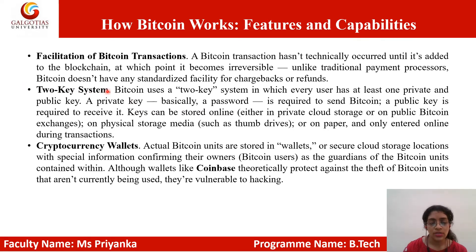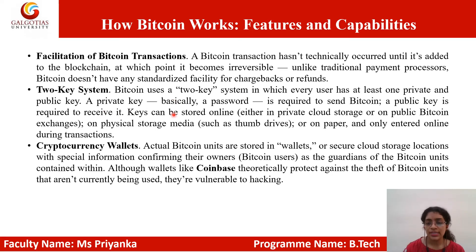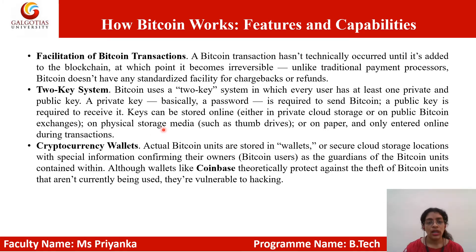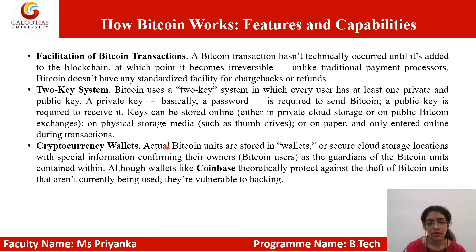Next is the 2-key system. Bitcoin uses a 2-key system in which every user has a public key and a private key. The private key is basically a password required when sending Bitcoin. The public key is required to receive Bitcoin. Keys can be stored online, on physical storage media, or on paper.